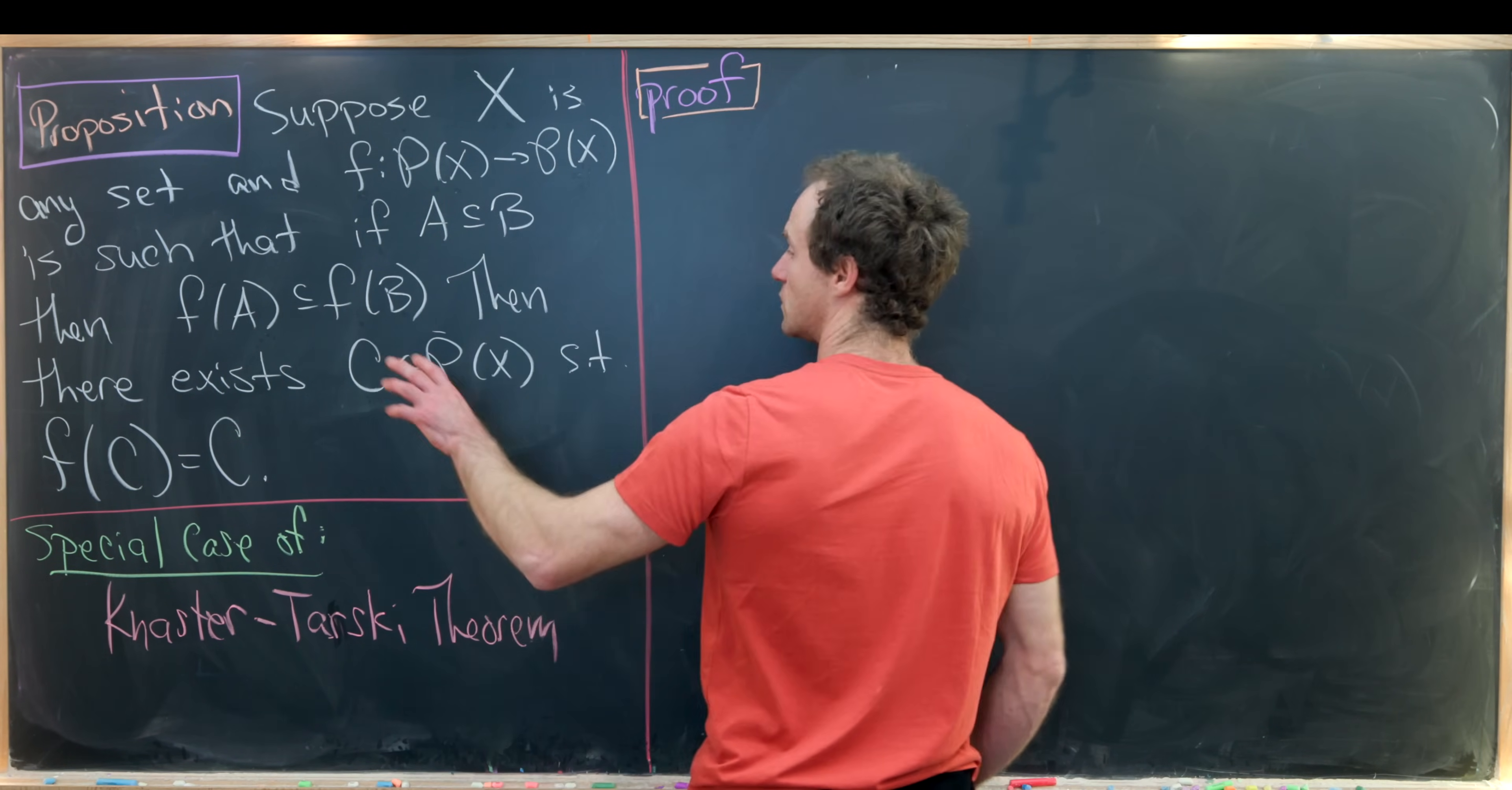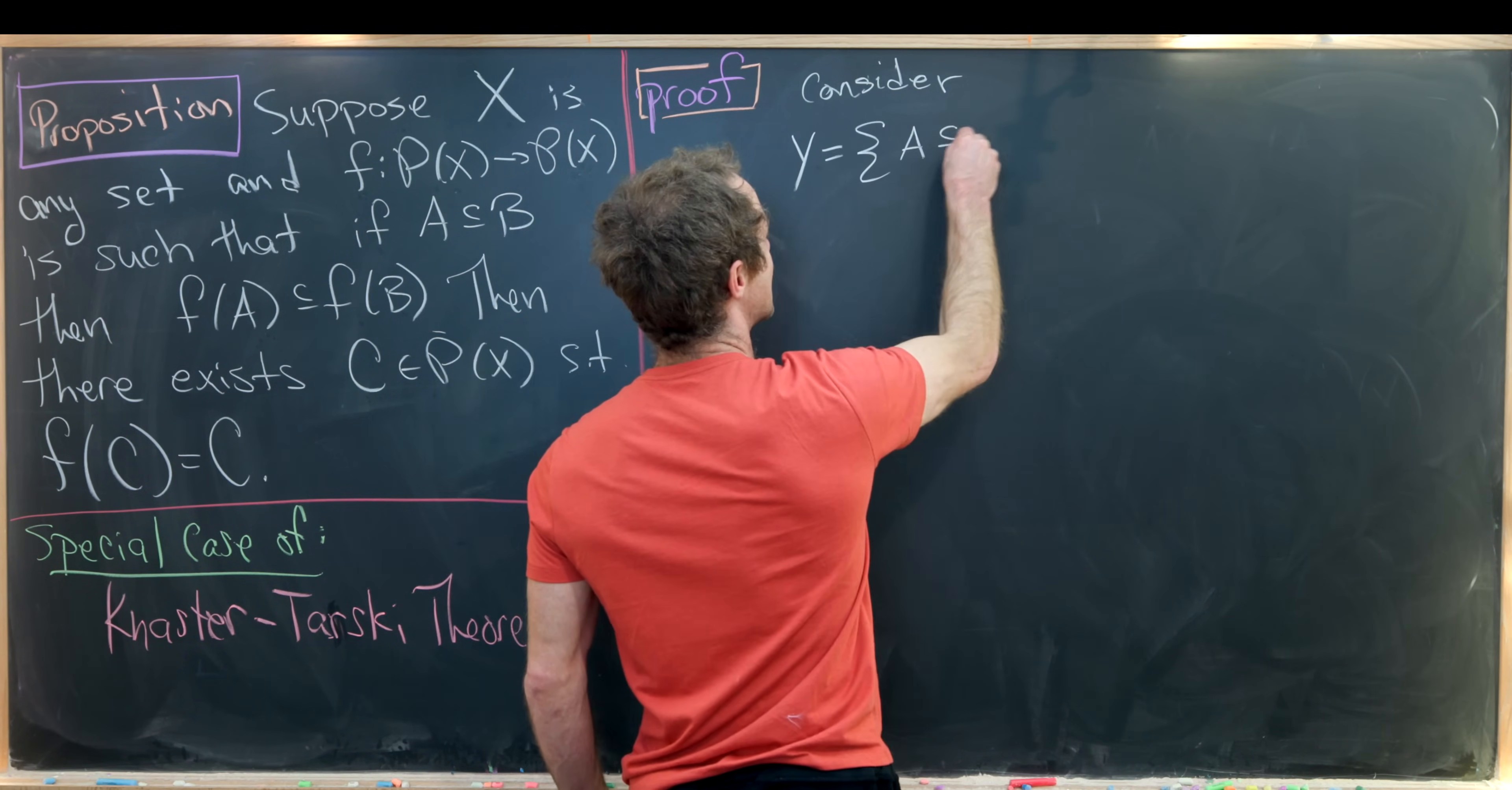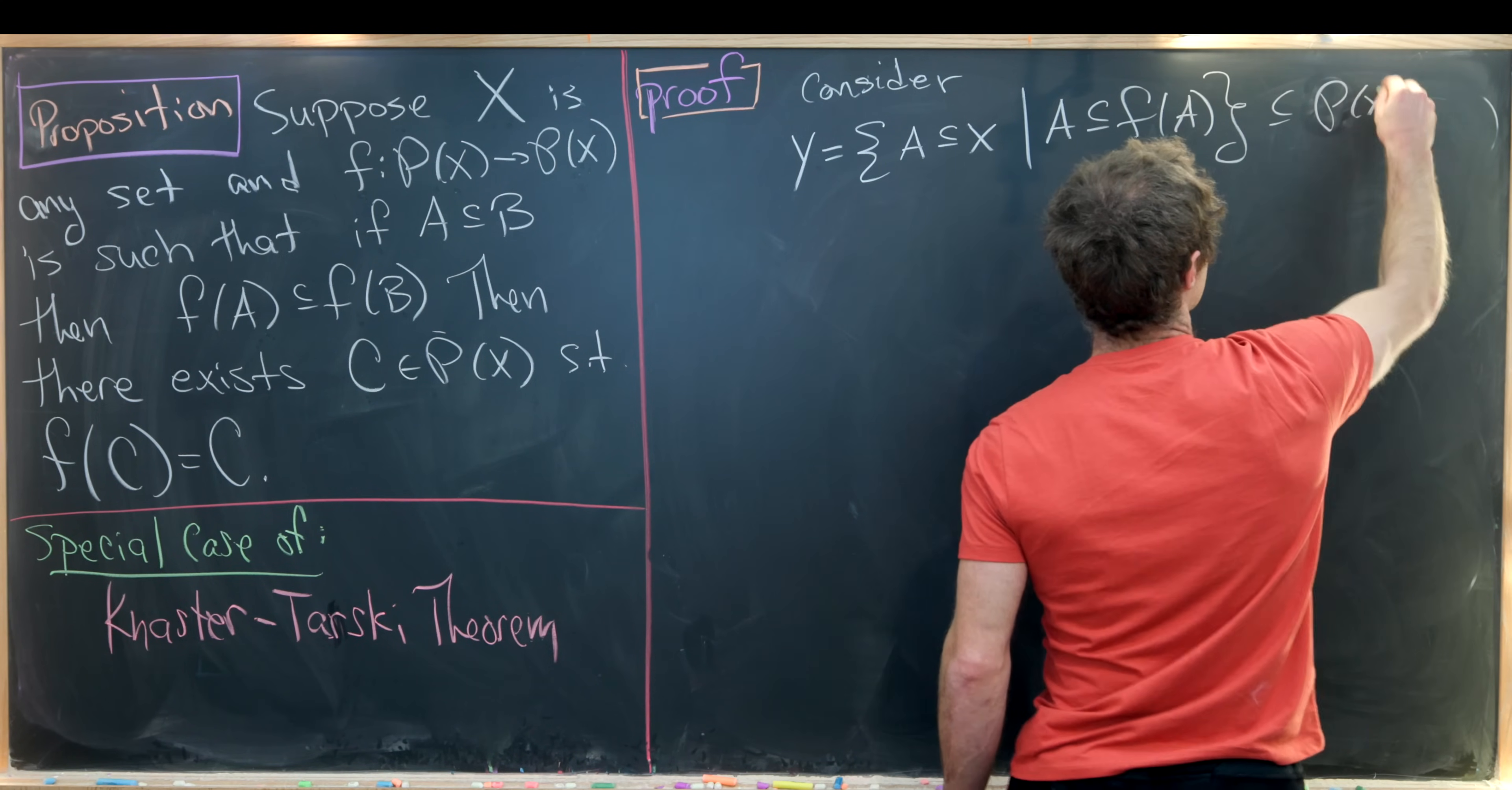Okay so we'll do that by considering the following subset of the power set. So this is going to be made up of subsets of x. So I'm going to call this capital Y and this is going to be all a which are subsets of x, in other words they're elements of the power set, such that a is contained in f of a. So like I said this is pretty clearly a subset of the power set of x.